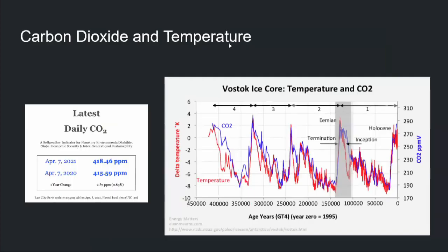We can also measure the carbon dioxide and link that to temperatures. We discovered decades ago that the concentration of CO2 in the atmosphere is directly correlated to the temperature of the atmosphere. When we have an increase in CO2, temperatures spike, and when we have a decrease of CO2, temperatures cool down.